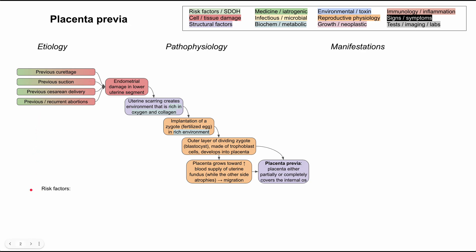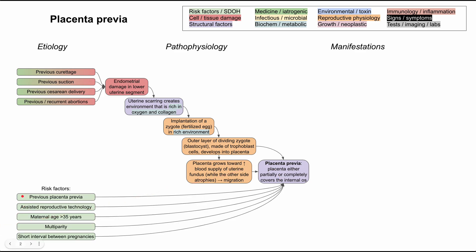There are some other risk factors that are less directly associated with endometrial damage but still correlate with placenta previa. Patients who have had a previous placenta previa can have another one in the future. Moms who have used assisted reproductive technology are predisposed. Mothers of advanced maternal age — above 35 years old when they become pregnant — are also predisposed. Multiparity, meaning having multiple children, and having a short interval between pregnancies can also predispose someone to placenta previa.